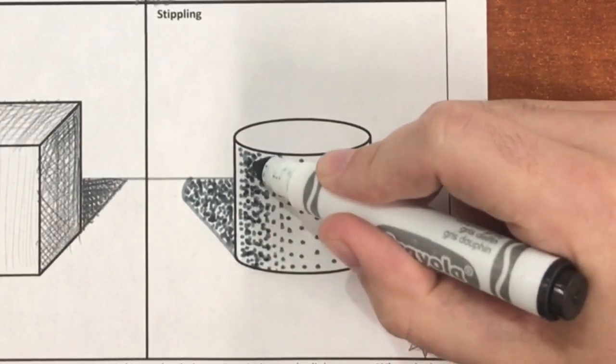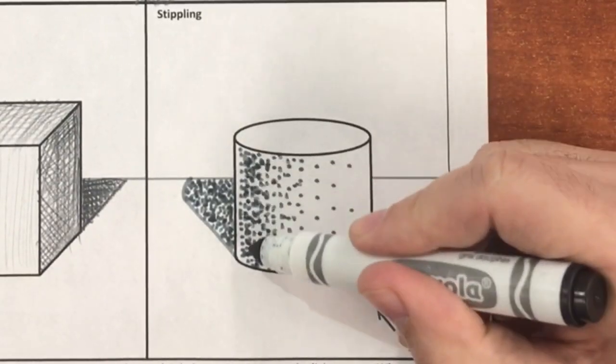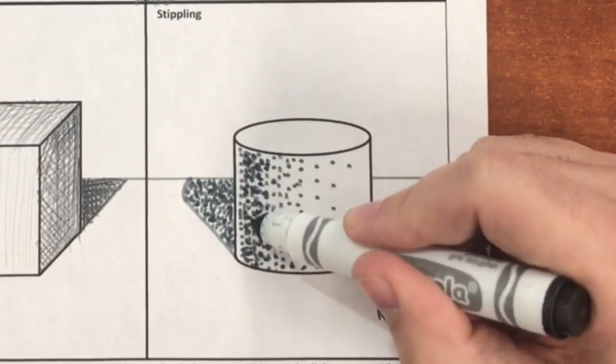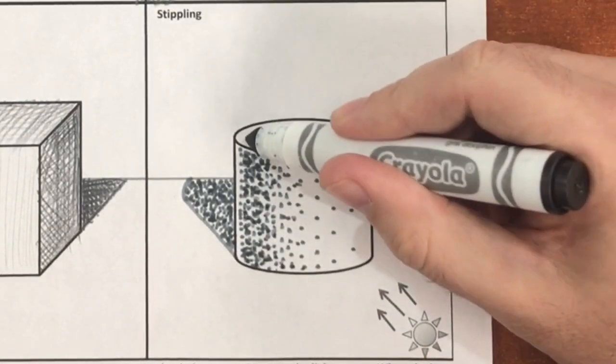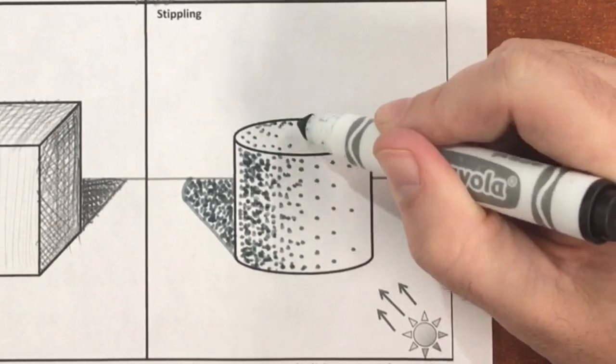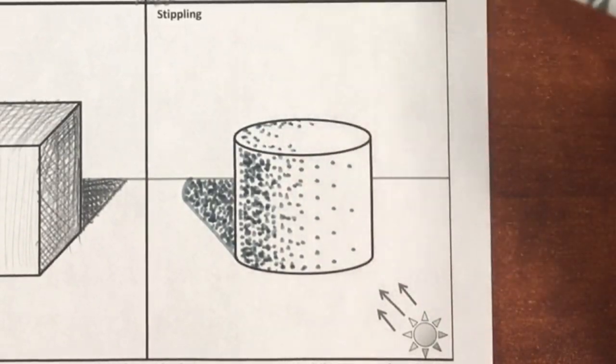Once you have practice and understand how to apply chiaroscuro to basic forms, it becomes much easier to apply the same concepts to much more complex forms and even to things that you draw in everyday life. Keep practicing!